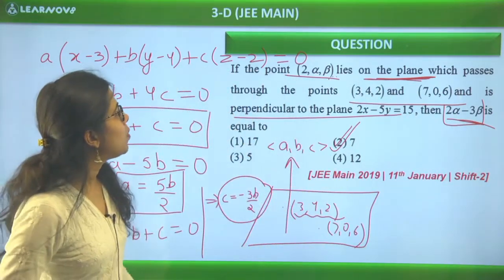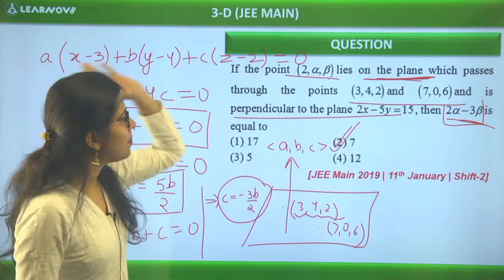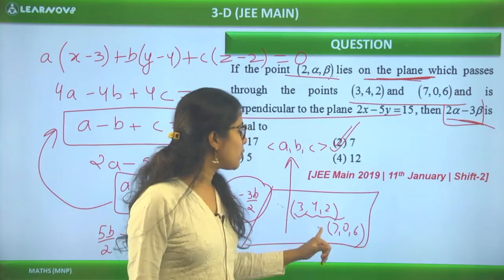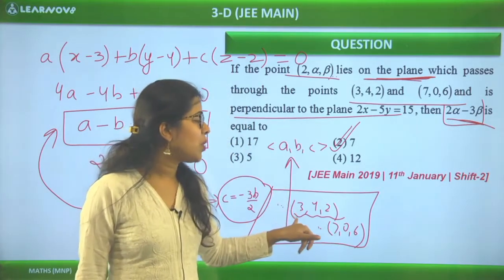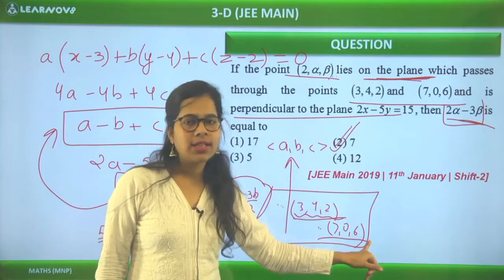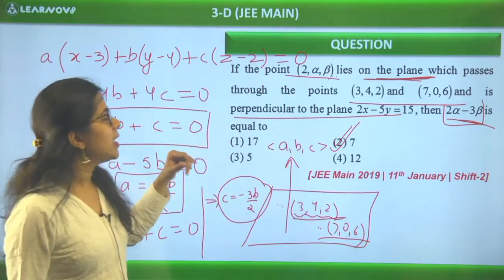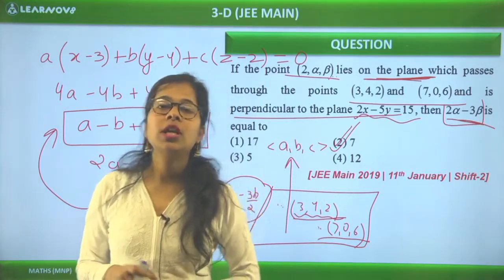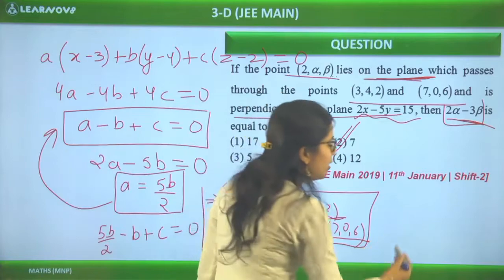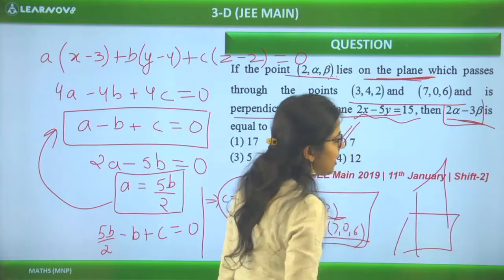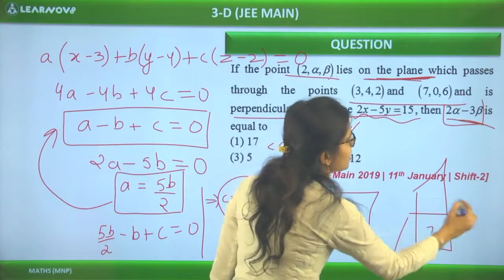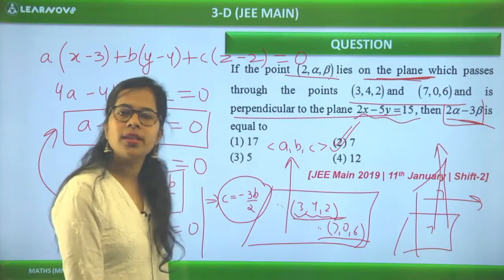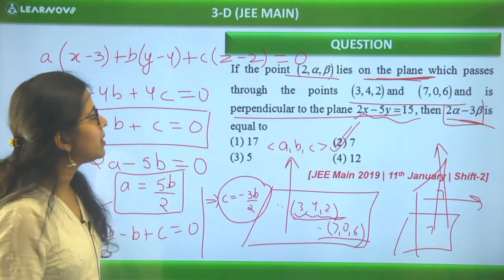This is a moderate level question. The key steps are: write the plane equation using one point, pass the second point through it for one relation, use the perpendicularity condition (normals' dot product = 0) for a second relation, find the ratios A:B:C, then substitute the given point to find the required expression.